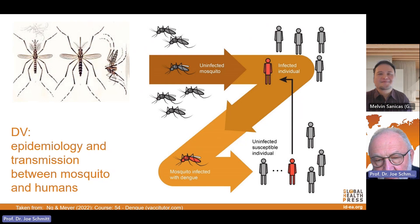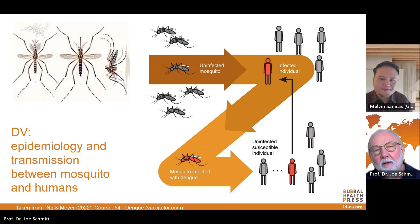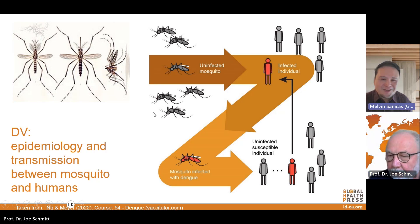So in the end, it may not be possible to completely eliminate the disease, but with a good vaccination program using a good vaccine, it should be possible to control it and reduce it to a minimum. Control is the goal.